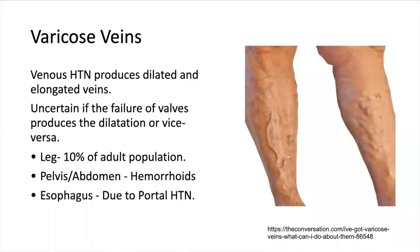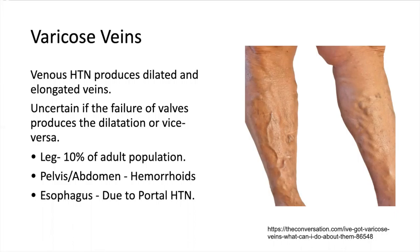The last topic is varicose veins — dilated and tortuous veins produced due to venous hypertension. It's uncertain whether dilation is produced due to valve failure or vice versa, but it's very commonly seen in the elderly population, with about 10% of adults having varicose veins on their legs. Hemorrhoids are another example of varicose veins seen in the pelvis or abdomen. Esophageal varices are a common complication of portal hypertension, and bleeding from them can lead to death, very often seen in patients with cirrhosis.